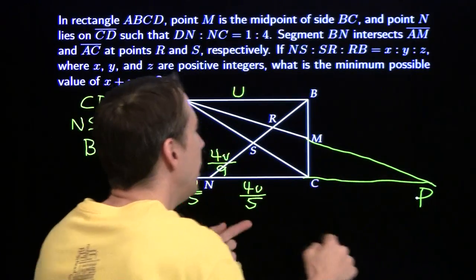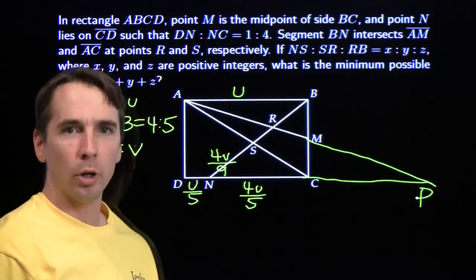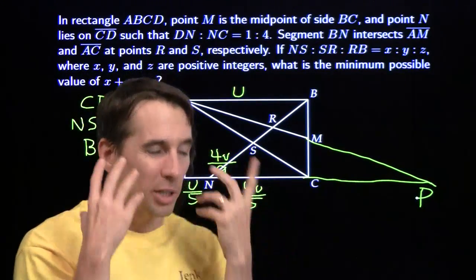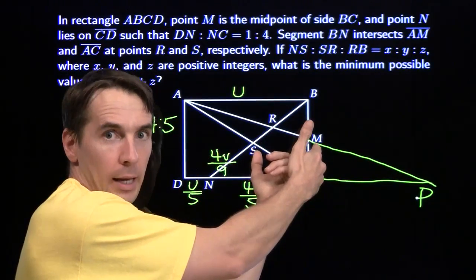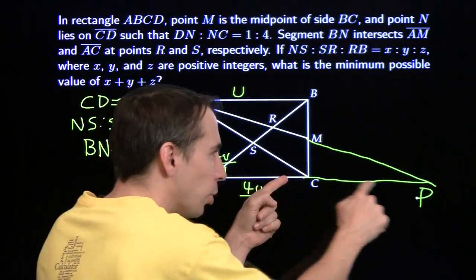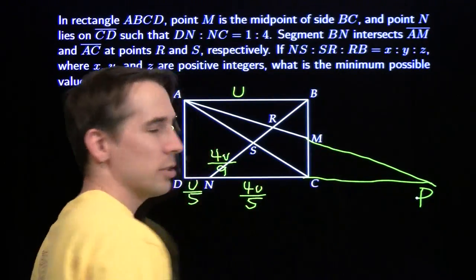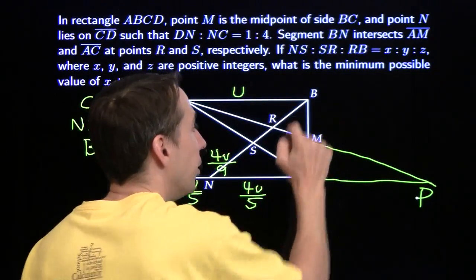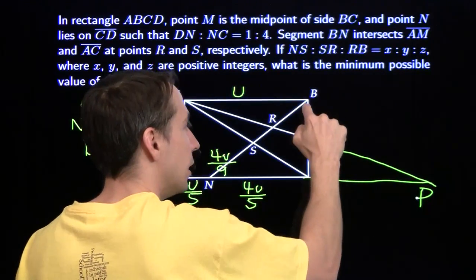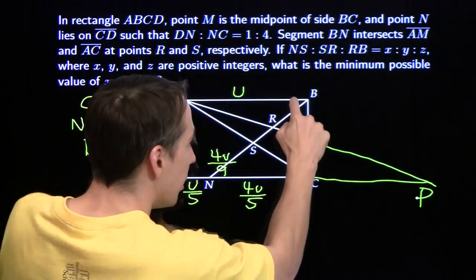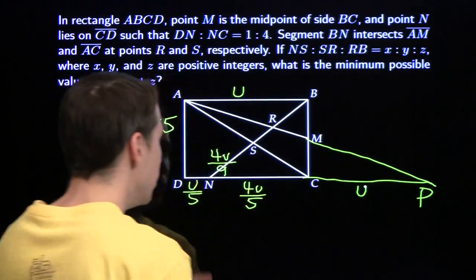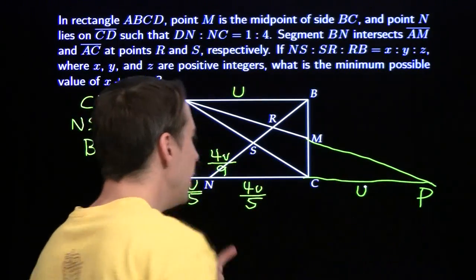We've got similar triangles NRP and BRA. But we don't know what the exterior length CP is — oh wait, yes we do. That's where the midpoint comes in. I hadn't used the midpoint yet. The triangles BAM and CPM are not just similar, they're congruent — this side equals this side, these two angles are the same, and both have right angles. So CP equals u, making NP equal to u plus 4u over 5, which is 9u over 5.